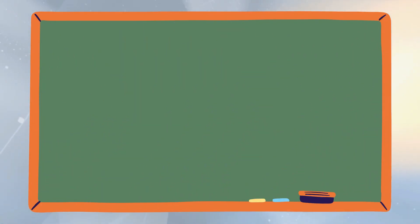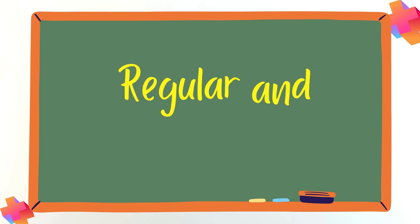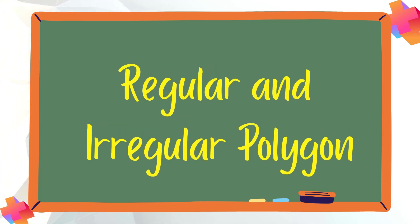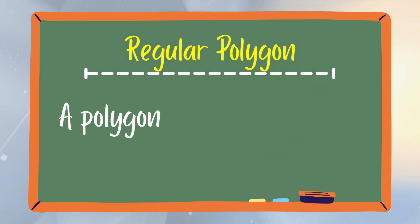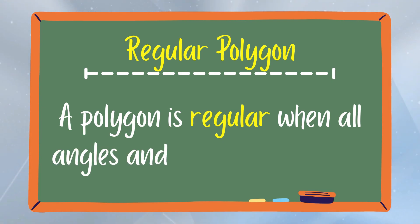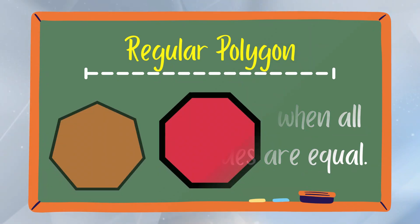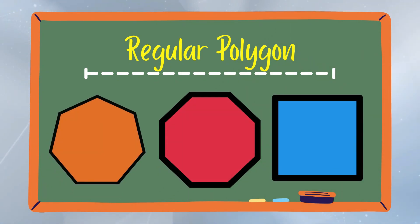Now, we already learned about the different types of polygons. But how can we classify if the polygon is a regular or an irregular polygon? A regular polygon is a polygon in which all sides and angles are equal.